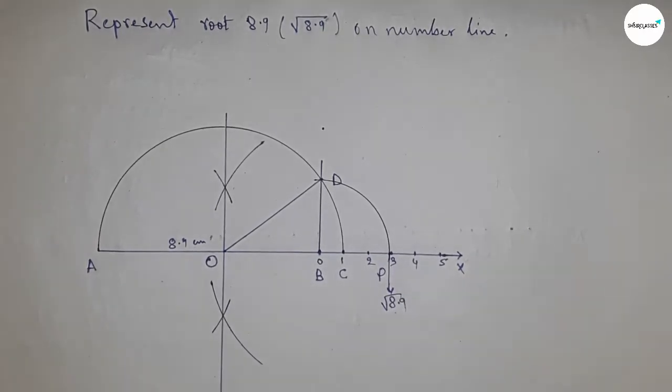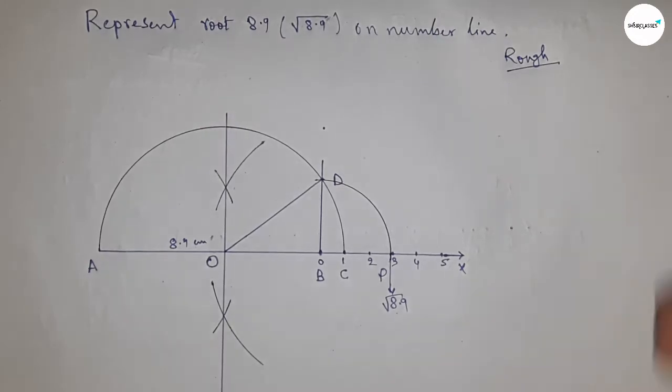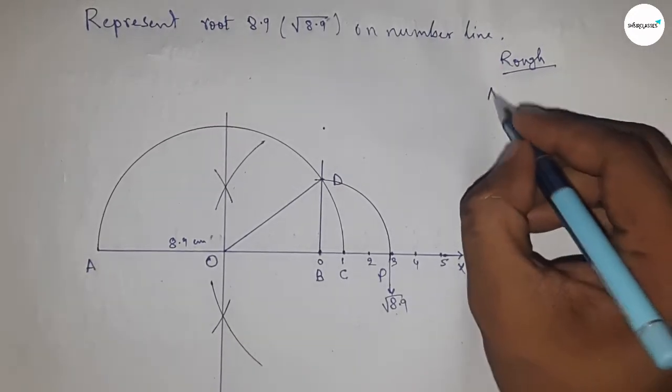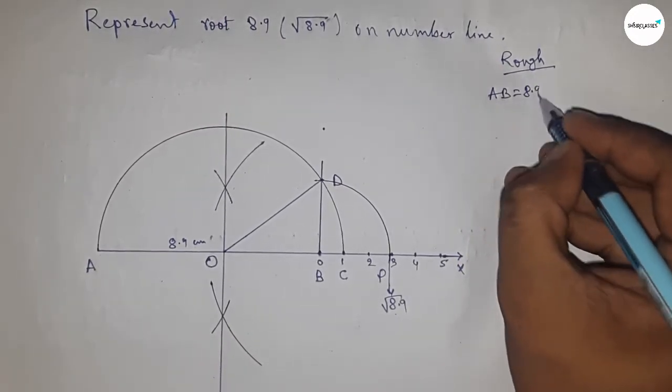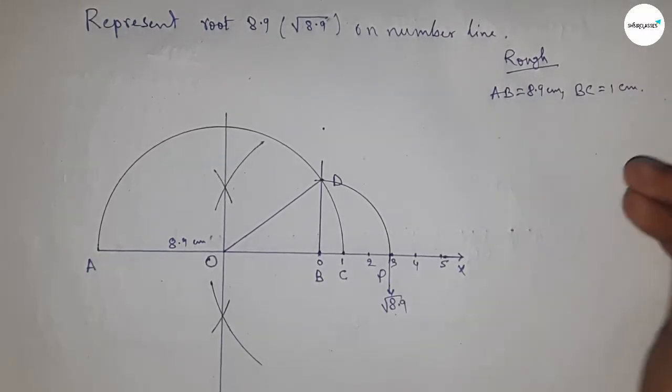Now roughly discussing the calculation. So given AB equals 8.9 centimeters, BC equals 1 centimeter.